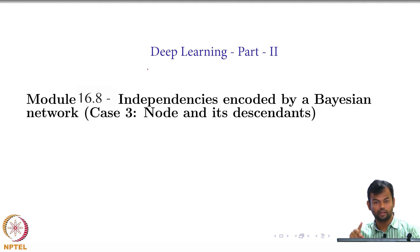We have come up with two rules so far. Now look at the third case. We looked at node and its parents, we looked at node and its non-parents, now we are going to look at node and its descendants.